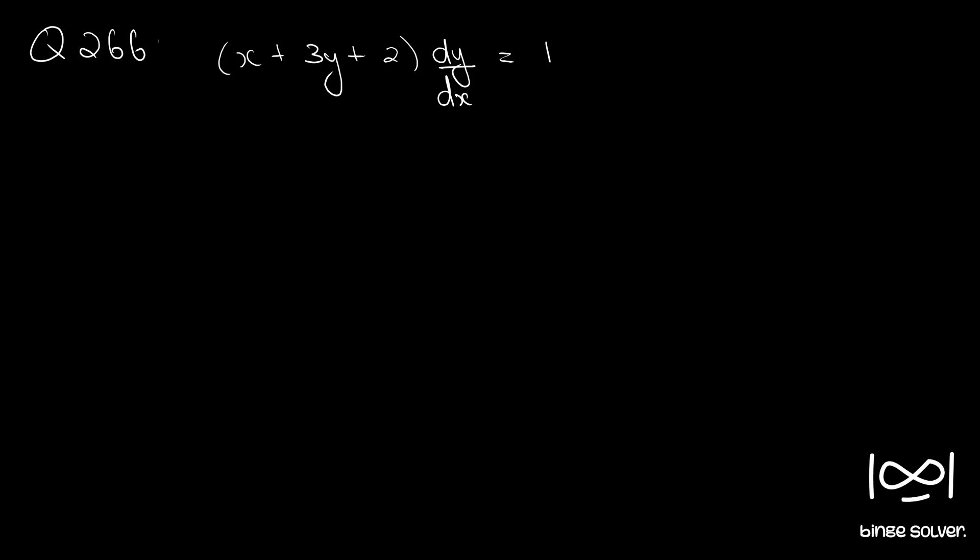Question number 266. The equation is: x plus 3y plus 2 times dy by dx is equal to 1.